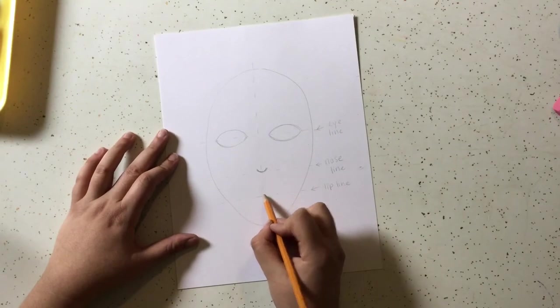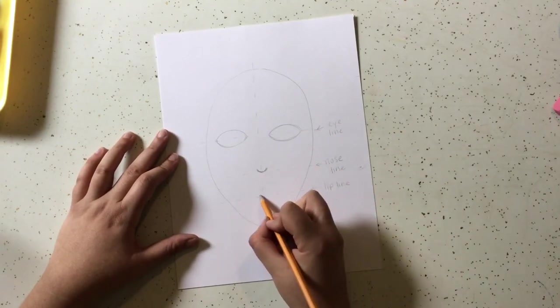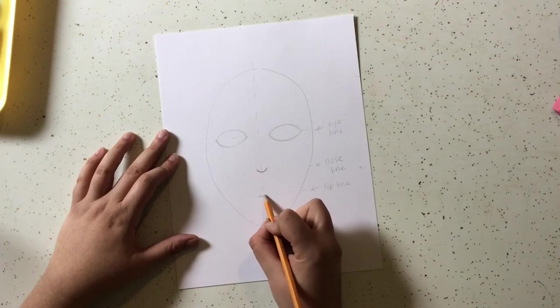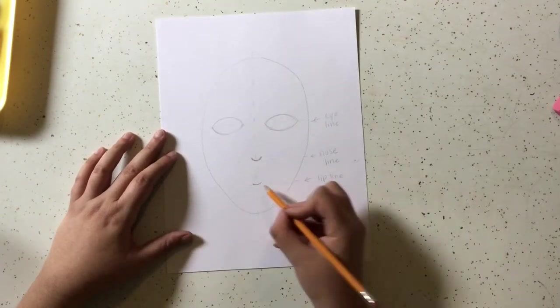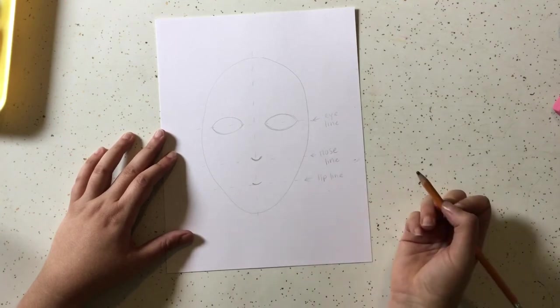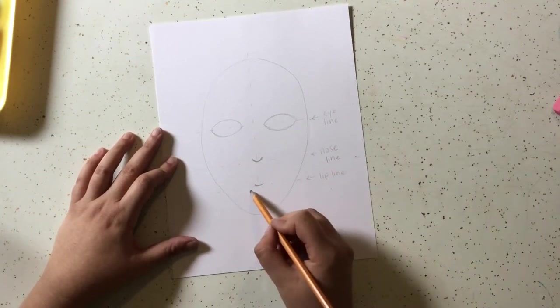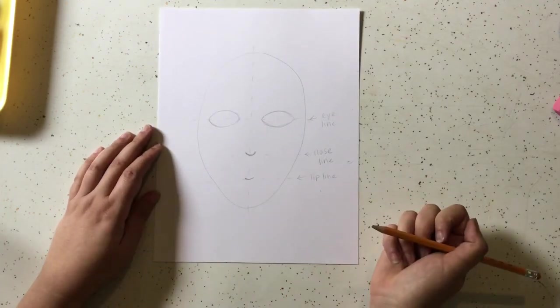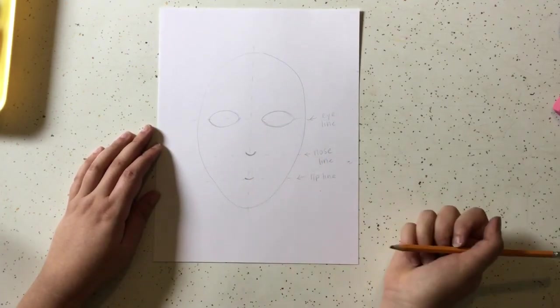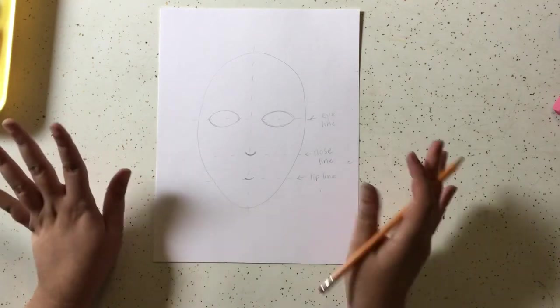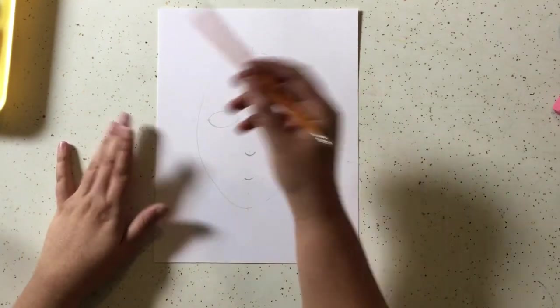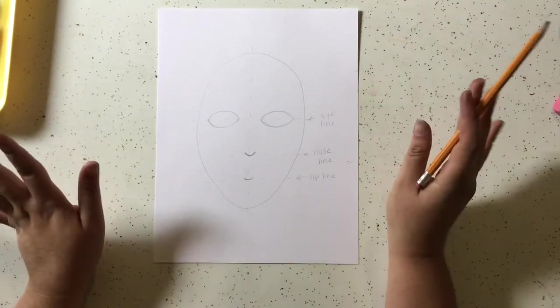And this spot right here, just like we did with the nose, we're going to do another little flattened out U-shape. And that is going to be the center of our lips. So, we'll have a bottom lip down here and a top lip above. But for now, all you need is that. Now, I know it's looking kind of like an alien so far, but we'll get some details in there and add some hair. That'll help.